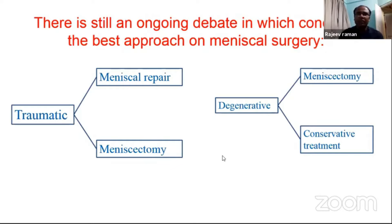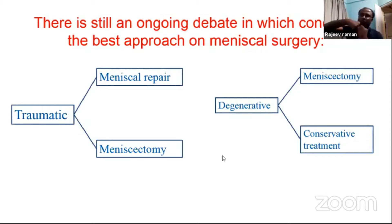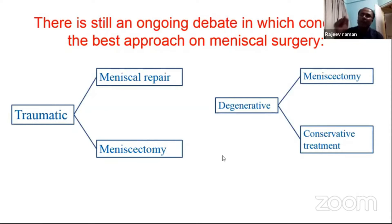If you look at traumatic tears, most are in a young, loaded knee. Because of rotatory movement over the knee, there is a pivot between the tibia and the femur leading to a tear. Most of these tears can be repaired and the repairs are good. If you go to the literature, traumatic tear repair results are quite good.